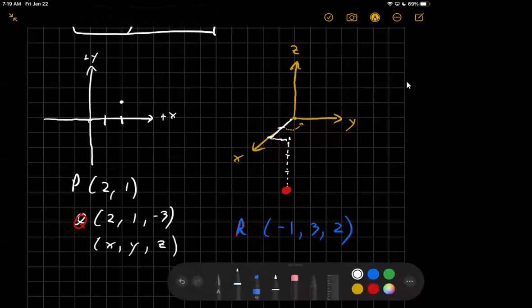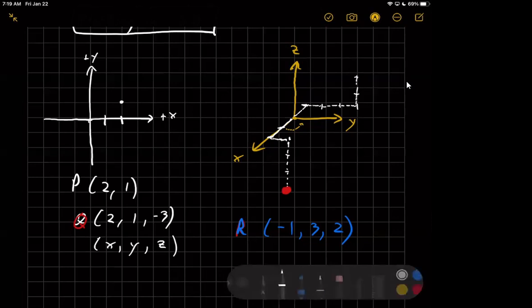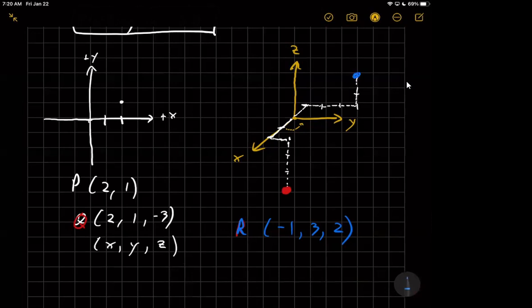So back to white. What would negative one look like? We would go back in the negative x direction, sort of one unit, kind of estimating what that would look like. And then I'm going to go over one, two, three units in the y direction. So it'd be about there. And then I have to go up one, two units in the z direction, kind of estimating what that would look like. And so the point R is back there.